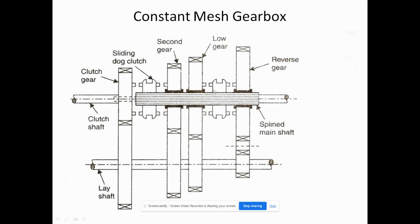If the second dog clutch moves to the right side, then the reverse gear will be produced. If the second dog clutch moves to the left side, then the lower gear will be produced. If the first dog clutch moves to the right side, then the second gear will be produced. And if this dog clutch moves right, the neutral gear will be produced — giving us lower gear, second gear, and reverse gear.